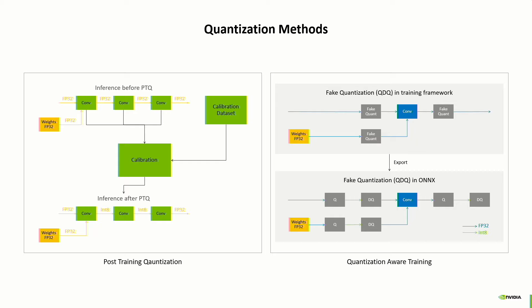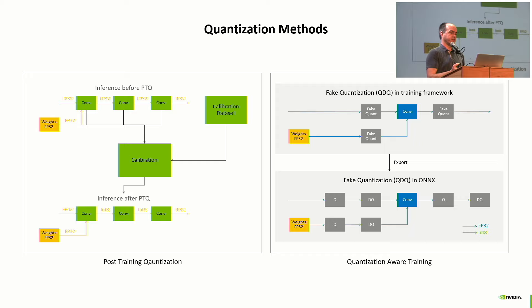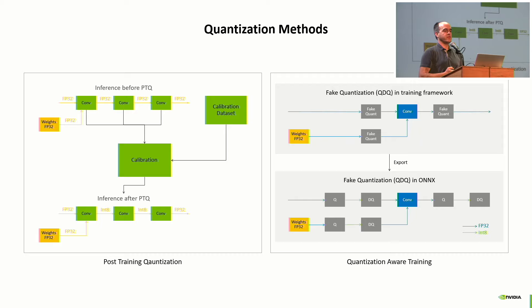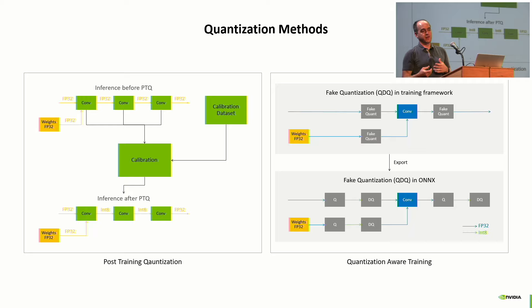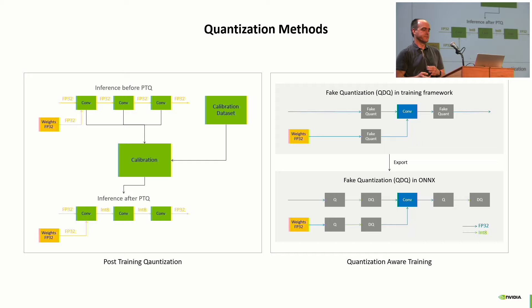For post-training quantization, you take your neural network and a calibration dataset — representative of your real-world inputs — calibrate the data, and convert your FP32 neural network into an INT8 network. There is also quantization-aware training (QAT), which involves fine-tuning your network with data. You insert fake quantization nodes into your network, execute the convolution, and try to learn how to convert from FP32 to INT8 and back to FP32.